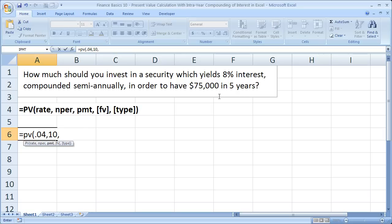Comma. Now for the payment, we're not going to worry about that for this one because this is not an annuity problem. We don't have an equal series of cash flows going in or coming out. So what you can do here is simply put a 0 or you can leave it blank and add another comma.